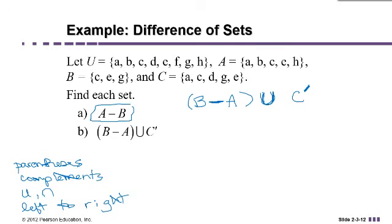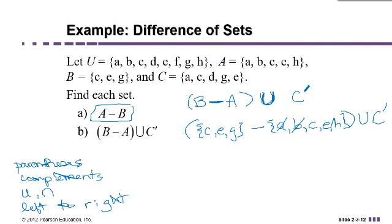So in this case, I'm going to focus in on the parentheses first. In the parentheses, we have B, which contains C, E, and G, and we're taking away from that the set A, which contains A, B, C, E, and H. Let's perform this set operation of taking the difference. Remember the A and the B and the H, these have no effect on the difference because the first set doesn't contain them. But the C and the E are going to be removed. And so what we're left with in the parentheses is really just the set containing G.